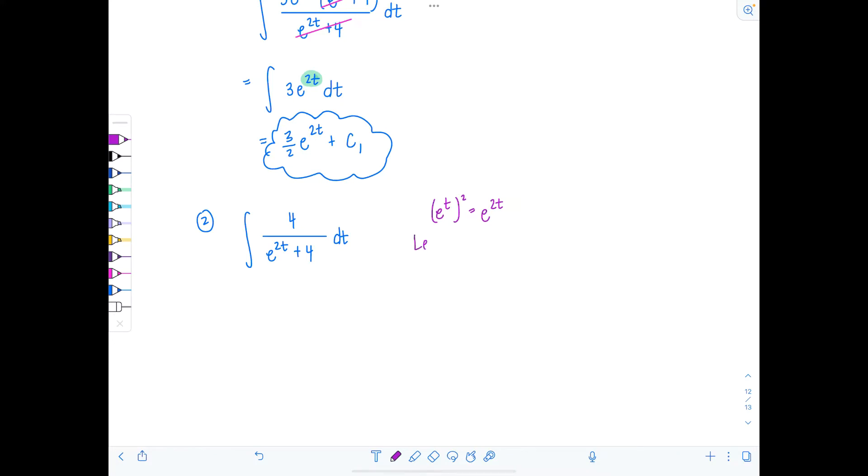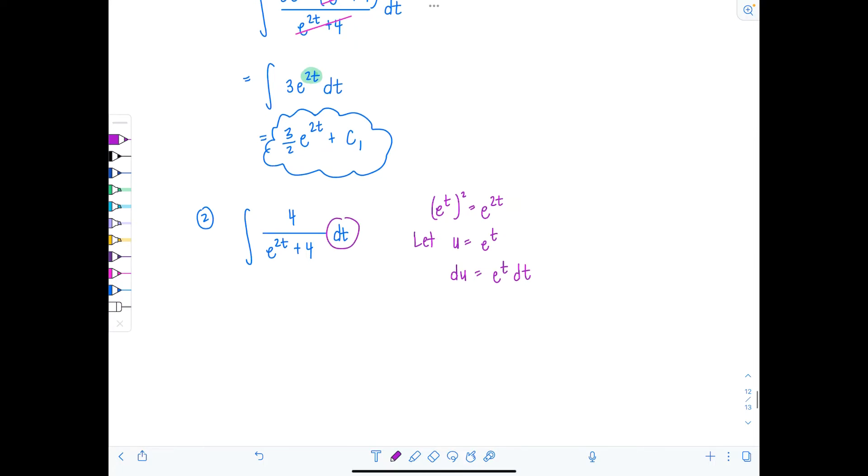So I'm going to let u equal e to the t, and then naturally du is going to be e to the t dt. And you might be saying, I think you've gone awry. I don't see e to the t dt, just dt. But that's fine. I'm not stressing. All I have is dt. So du over e to the t is dt. But that also means, don't forget, e to the t is u. So I can just say du over u is equal to dt.